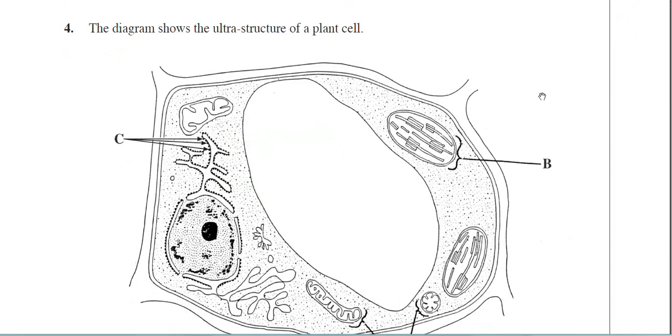The examiner's been kind. He's told you it's a plant cell in this instance. He may not do that in other questions. He may decide to ask you what type of cell it is. So just to let you know, if it's got a chloroplast, that is a chloroplast there. It's got to be a plant cell.